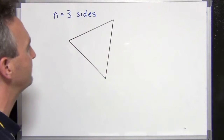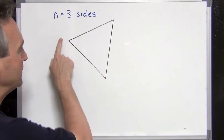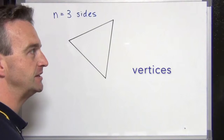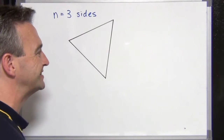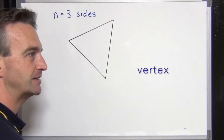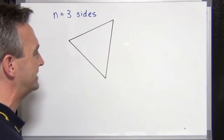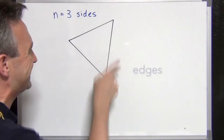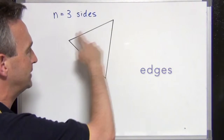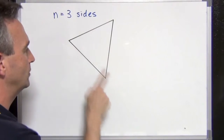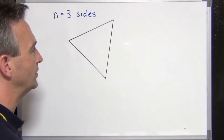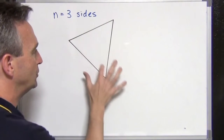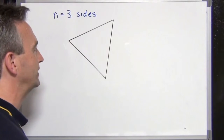Now let's have a look at the parts of a triangle. We have the corners here. The corners are called the vertices. If we're just talking about one, then we say it is a vertex. The sides more technically are referred to as edges, so we have three edges and three vertices. Within the vertices, we have angles — these are the internal angles of a triangle and there are three.